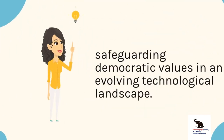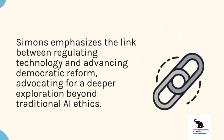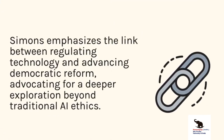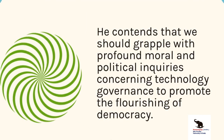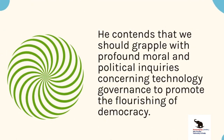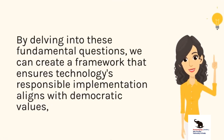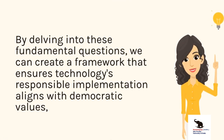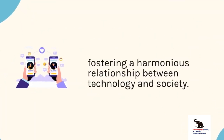Safeguarding democratic values in an evolving technological landscape, Simons emphasizes the link between regulating technology and advancing democratic reform, advocating for a deeper exploration beyond traditional ethics. He contends that we should grapple with profound moral and political inquiries concerning technology governance to promote the flourishing of democracy. By delving into these fundamental questions, we can create a framework that ensures technology's responsible implementation aligns with democratic values, fostering a harmonious relationship between technology and society.